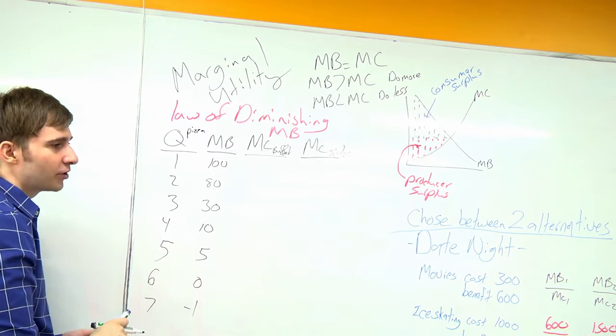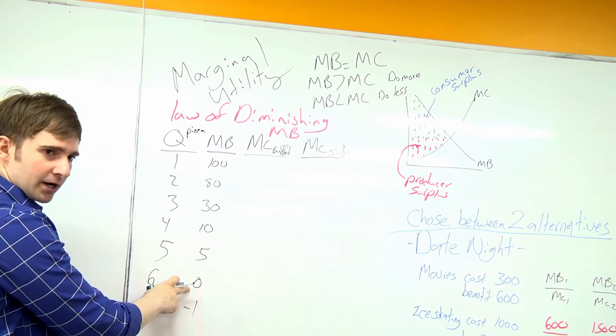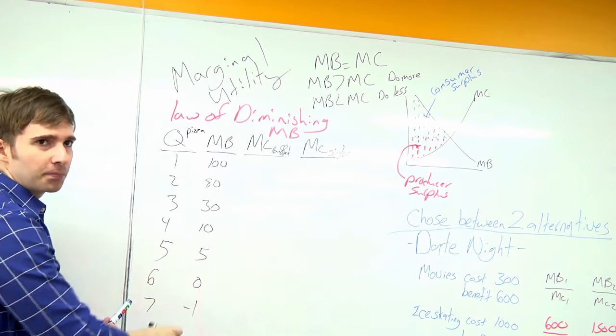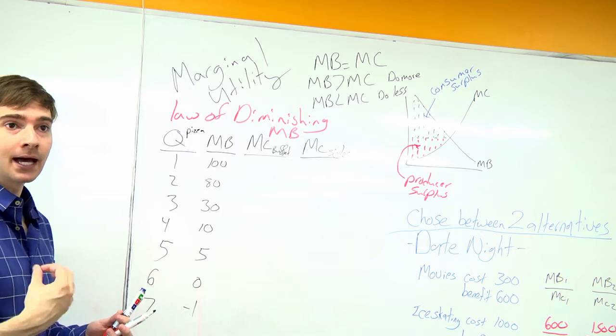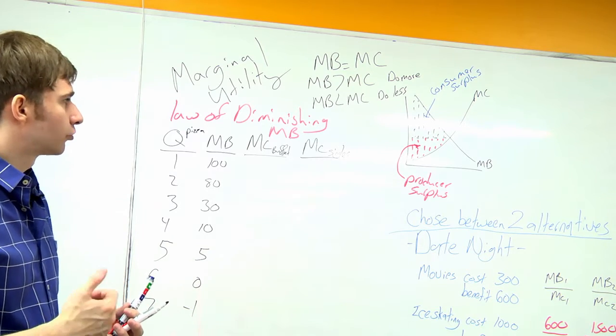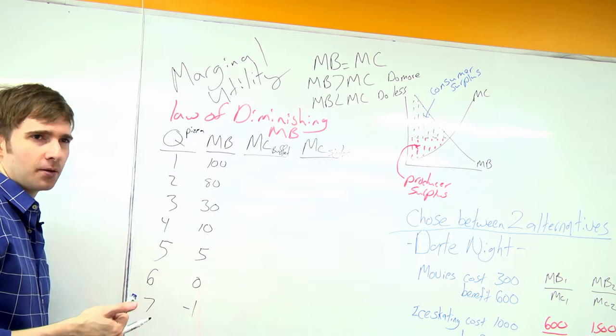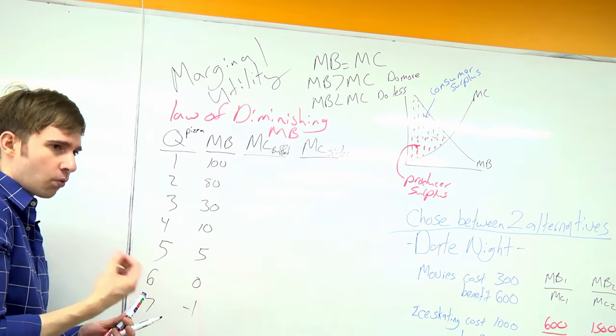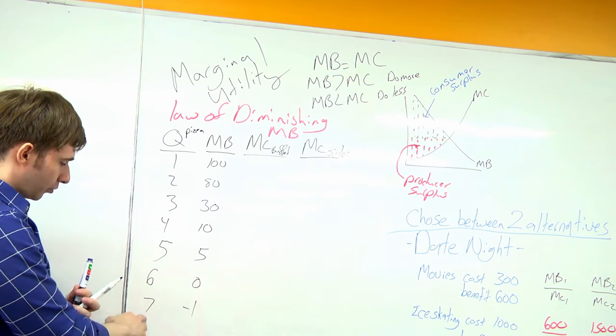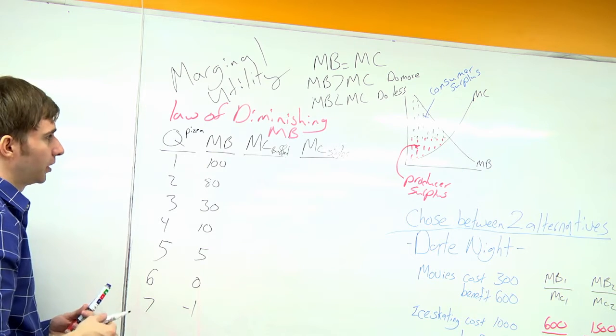The sixth slice of pizza, you're not willing to pay any money for it. The seventh slice of pizza, you're actually willing to pay money not to eat, right? You're so full, you feel so sick, you would be a negative one happiness to consume that seventh slice within that period of time.